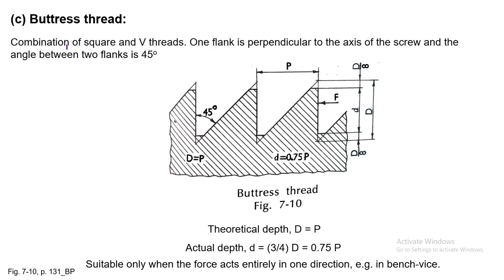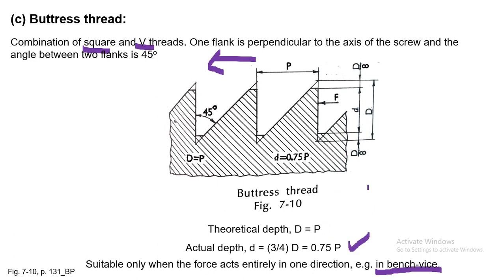Buttress threads are a combination of square and V-threads. One flank is perpendicular to the axis of the screw, and the angle between the two flanks is 45 degrees. This thread is used where a major amount of force is to be applied in one particular direction only. It is found in bench vices, where force is applied in only one direction.